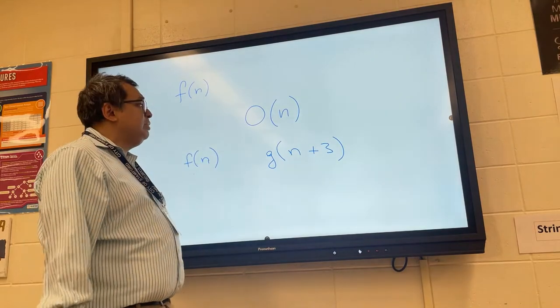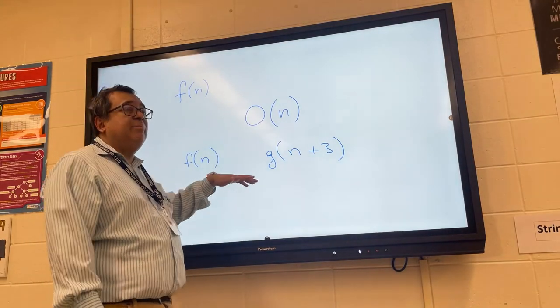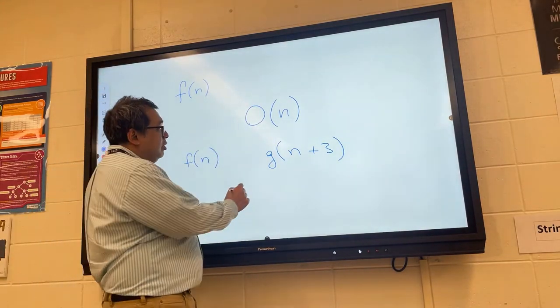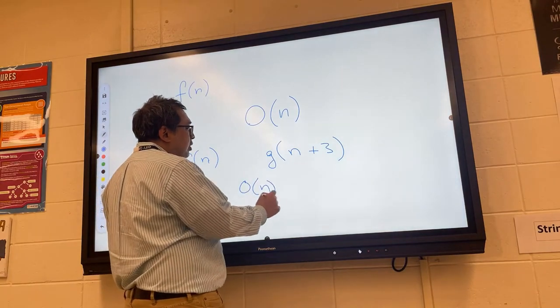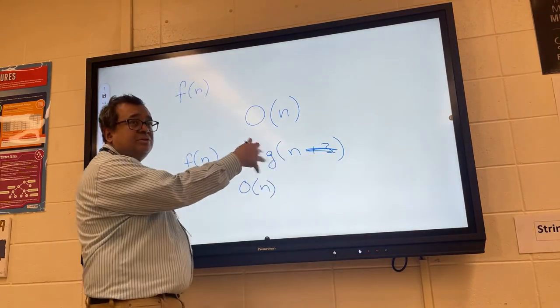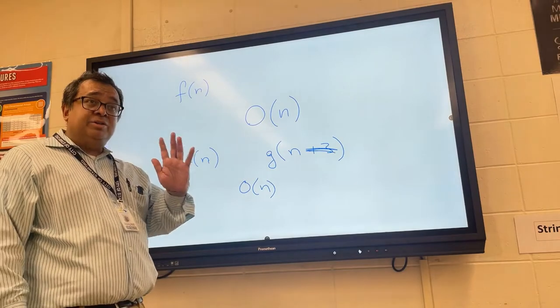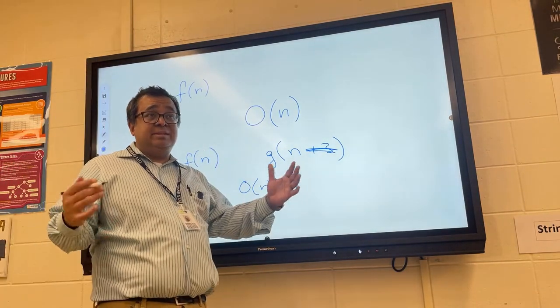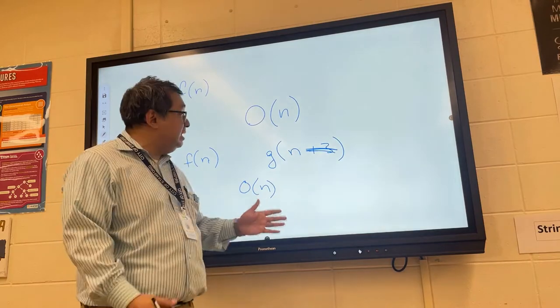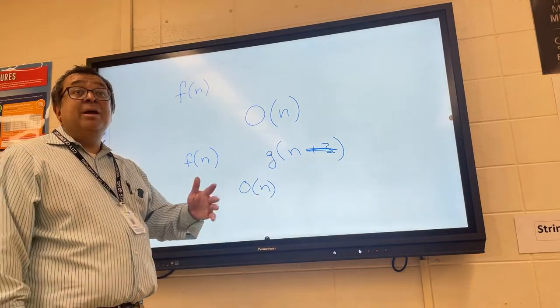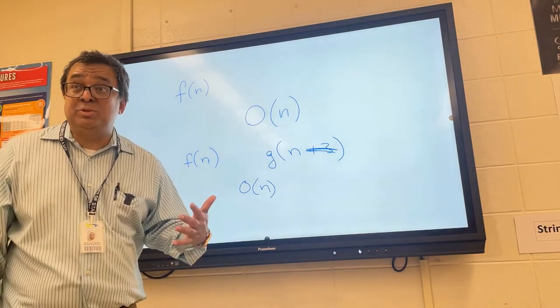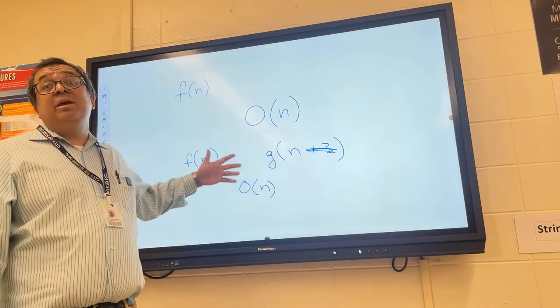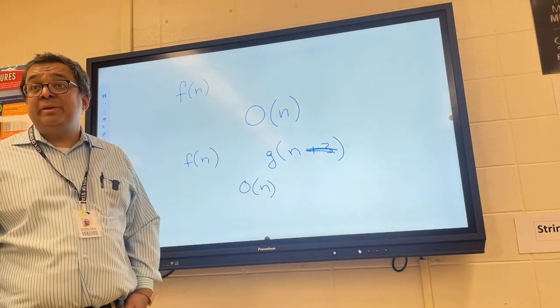So now my next question to you is, if we were doing end behavior, how would we describe the end behavior of this function versus this function? What would we say, would be similar or different? They're the same because we would pretty much ignore this term here for the purpose of end behavior, is that right? So we're going to do a similar thing in our Big O analysis, and we're going to say that these two functions are both Big O of n.